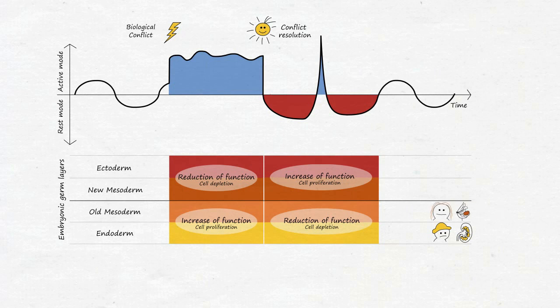The mammary glands belong to the old mesoderm, that is, in the context of an SBS, they react with functional enhancement and cell proliferation, and so after conflict resolution, with hypofunction and cell decay until normalization. Until now, the knowledge of the germ layers and tissue affiliations was missing from the tumor patient in our example, to determine SBS phase based on symptoms. Based on simple function enhancement with cell proliferation and function reduction with cell removal, almost all physical changes can be explained and understood.